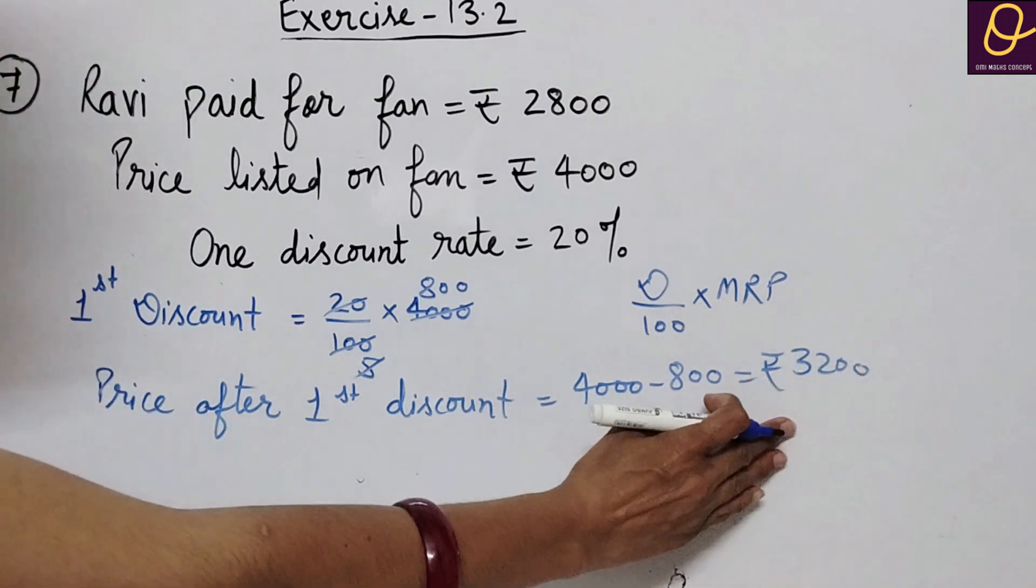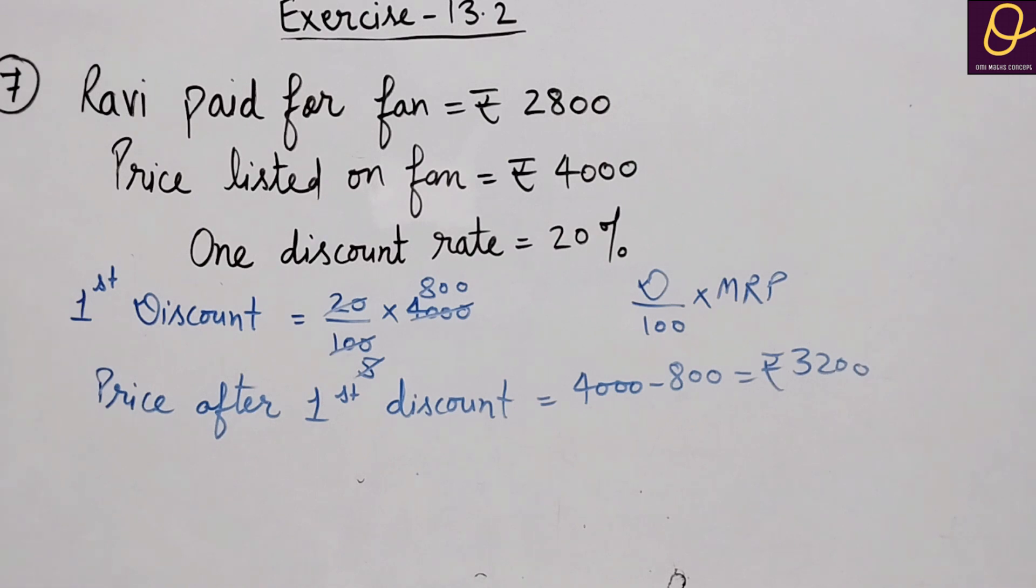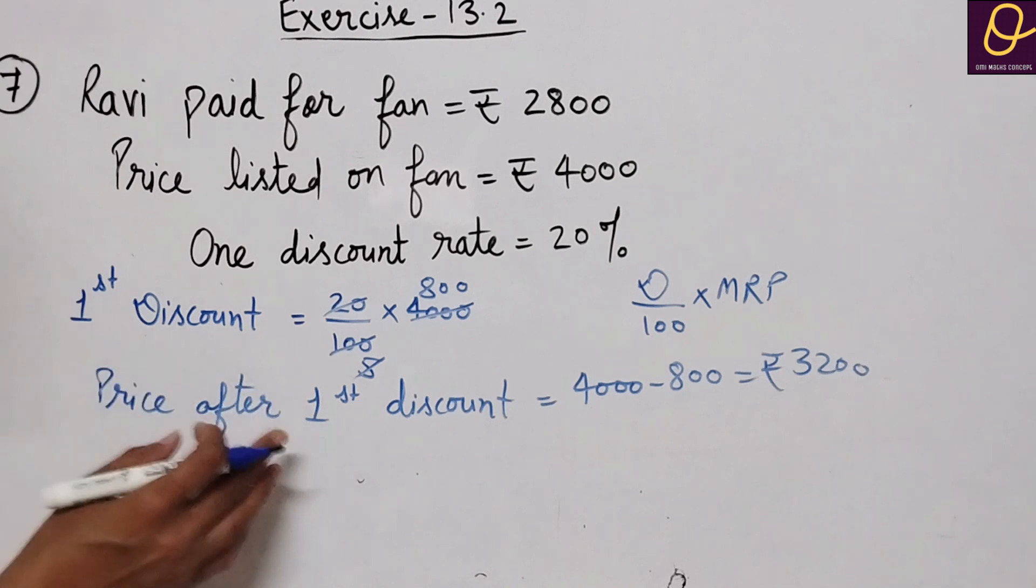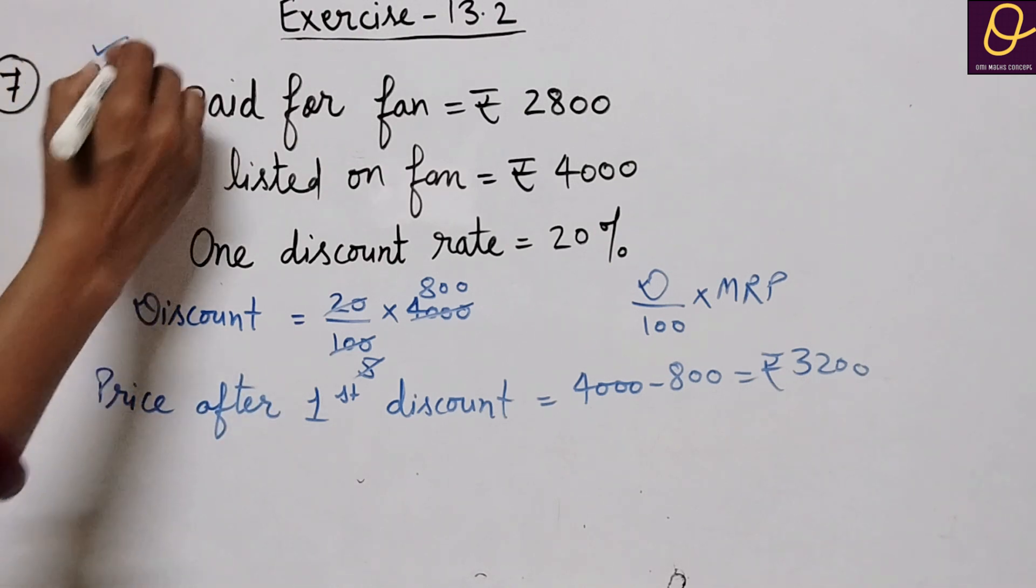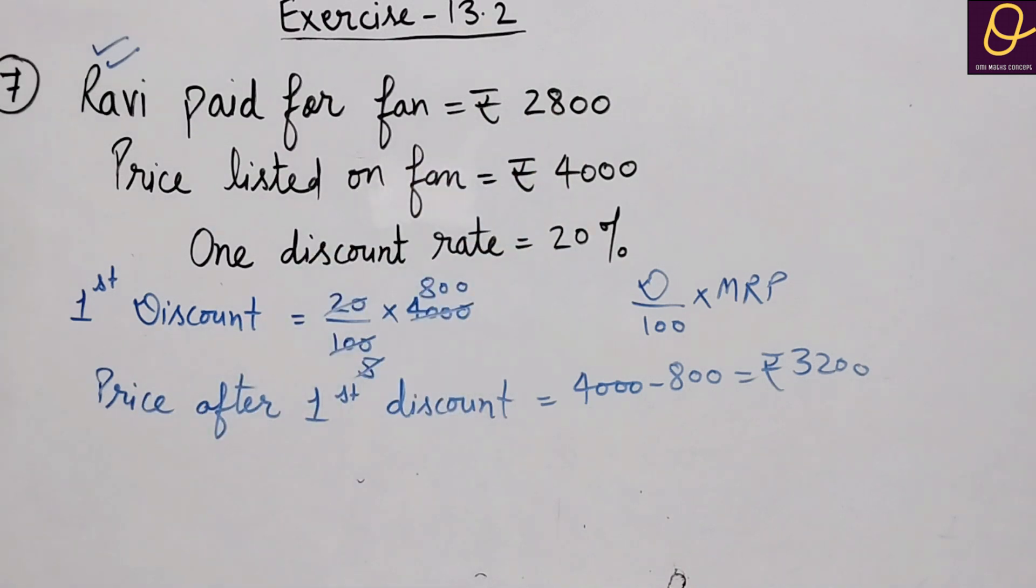Now the price at which it was sold after the second discount rate, we need to find that. For this we will see the difference in the discount.